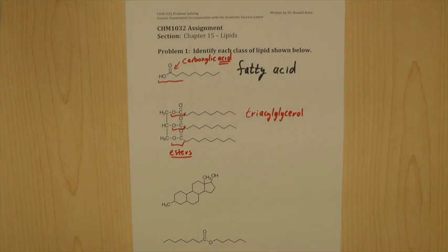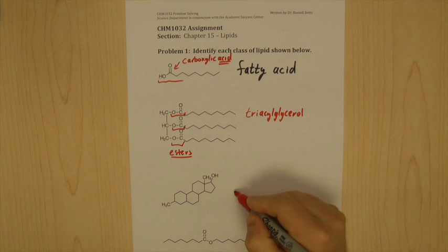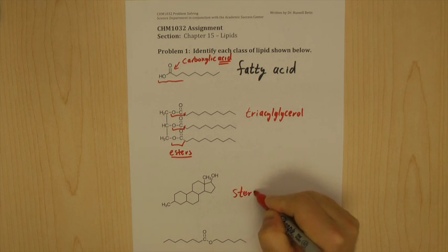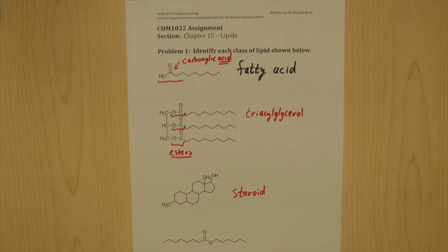Next, this is very typical. 6665 ring system. This is a steroid. Whenever you see a 6-membered ring attached to a 6-membered ring, attached to a 6-membered ring, attached to a 5-membered ring, that is a steroid.